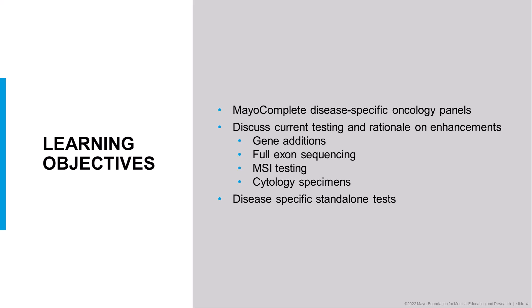We call this our Mayo Complete Disease-Specific Oncology panels. During my talk, I'm going to discuss the current testing that we have and the rationale for the enhancements we've made. I'll explain the gene additions we've made, the fact that we provide full exon sequencing for all of the exons in each of the genes in the panels. I'll explain that we offer microsatellite instability testing for all of our subpanels. I'll talk about the work we've done to validate cytology specimens for use with this test, and finally I'll finish with a brief discussion of some of the disease-specific standalone tests that we offer.